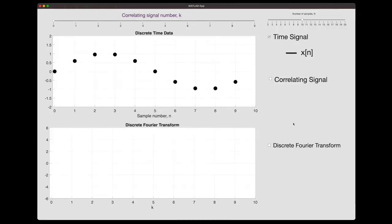Alright, I made a little MATLAB app here to show you how the DFT works. Here, the time signal x of n is just a pure sine wave with 10 samples. So per the definition of the DFT, we multiply this signal with e raised to an imaginary exponent, which I'm calling this whole thing the correlating signal. And hopefully, the name will make sense shortly.